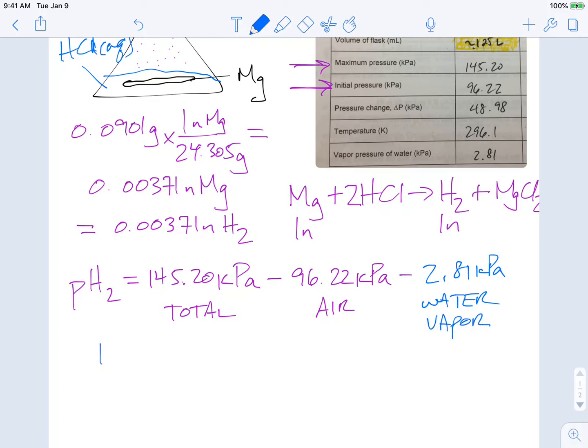So we're going to subtract that out, our 2.81 kilopascals. Again, this is coming from the water vapor. So the pressure that hydrogen by itself is putting into the flask itself is the difference between that. And so we're going to take 145.2 minus 96.22 minus 2.81. And we get 46.17 kilopascals. So that's the pressure that the hydrogen is putting in.